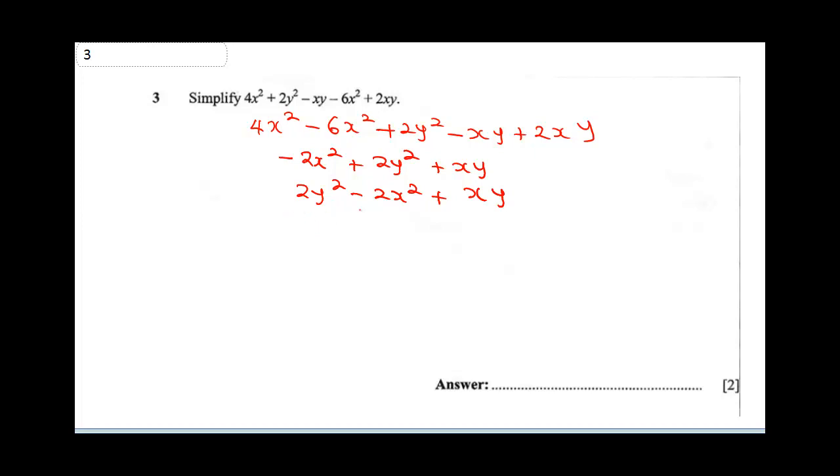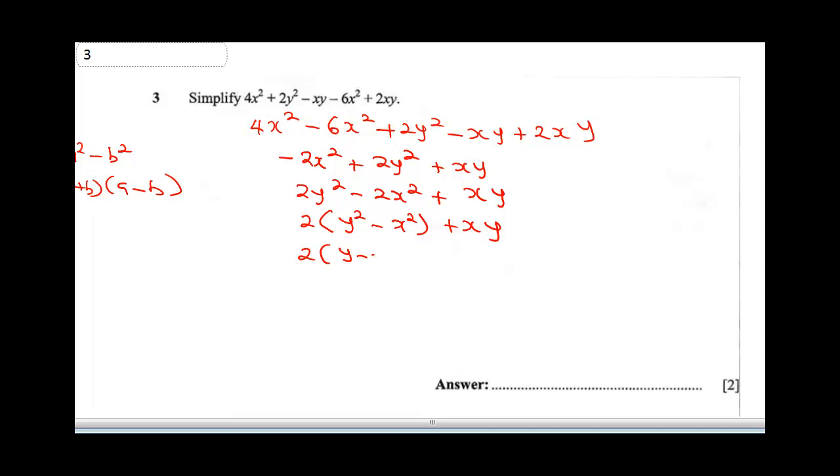To solve this, 2 can come out, so we can factorize 2 out. We'll have 2(y² - x² + xy). This is the difference of two squares. When we have a² - b², this gives us (a + b)(a - b). So here we're going to have 2(y - x)(y + x) + xy. This is our final answer; you can't simplify it any further.